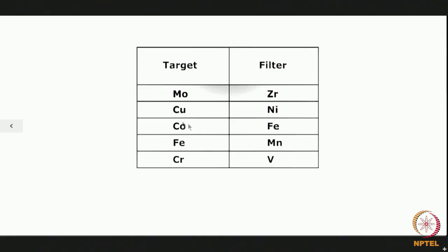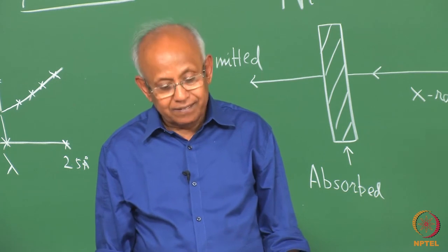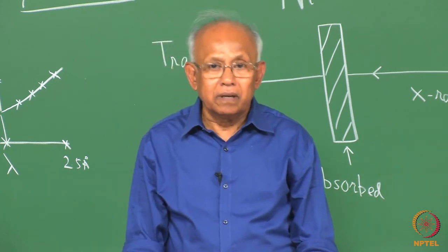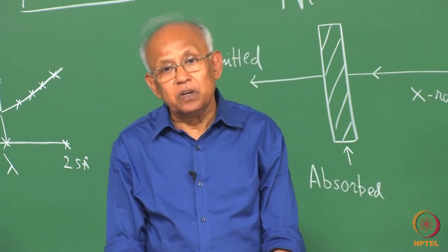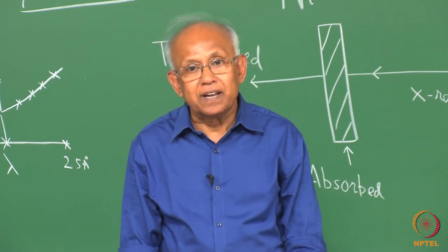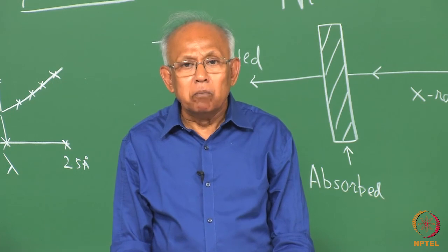For example, for copper it is nickel, you know atomic number difference is only one. In this way it is possible to figure out when you are using an X-ray machine with a particular type of target material, which material should be used as a filter material in order to get a more or less monochromatic or single wavelength radiation.